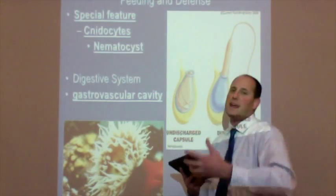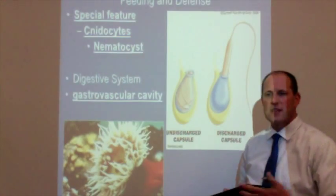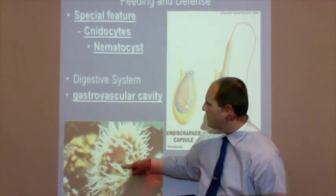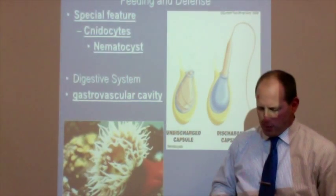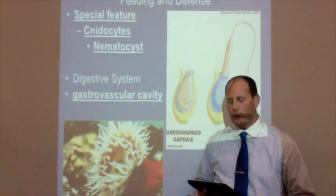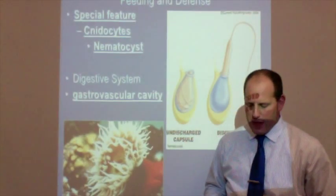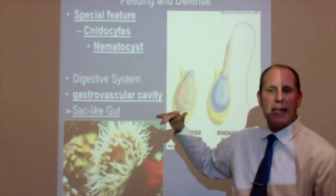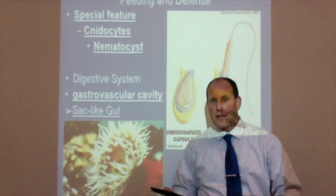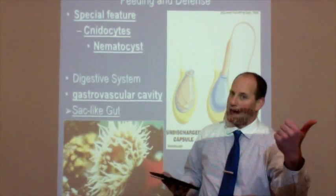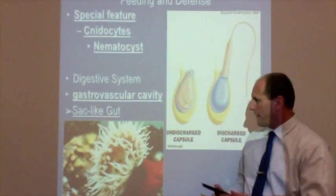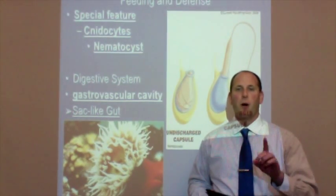Those tentacles pull the prey — now pierced by nematocysts — in toward the gastrovascular cavity. They do have a mouth. They'll pull prey in toward that opening and push it into the gastrovascular cavity. They don't have a stomach or intestines; the gastrovascular cavity is where food is digested and nutrients are absorbed. Scientists call this a sac-like gut — just like a garbage sack, it has one opening. Food goes in and waste comes out that same opening.